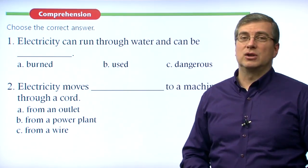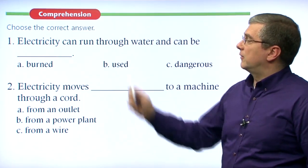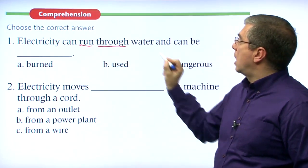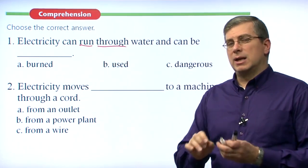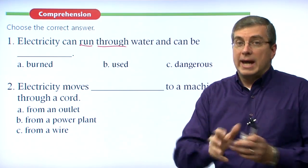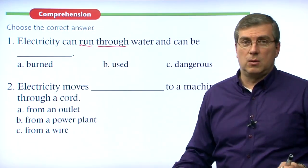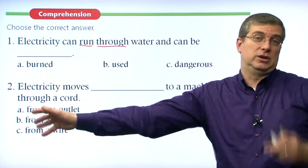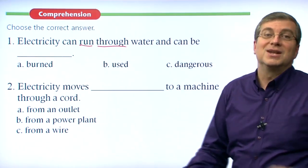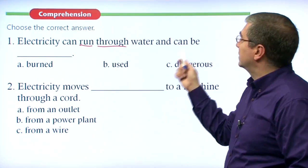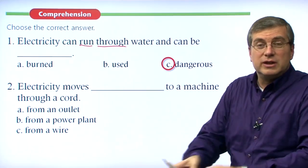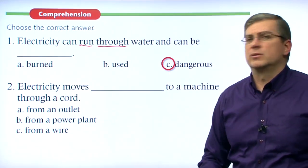In our reading comprehension questions, number one: electricity can run through water. Remember — electricity runs through metal, especially copper, very well. But it can also run through water, and we can't control water well. When electricity goes into water, it goes in all different directions, so it can be: A) burned, B) used, or C) dangerous. C — dangerous — because electricity is running through the water in many different directions and we can't control it. Be careful with electricity around water.